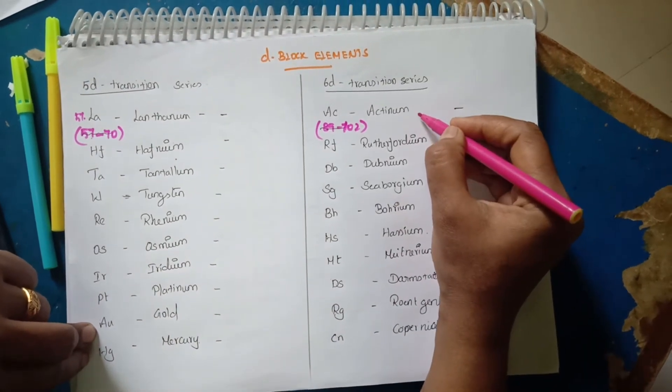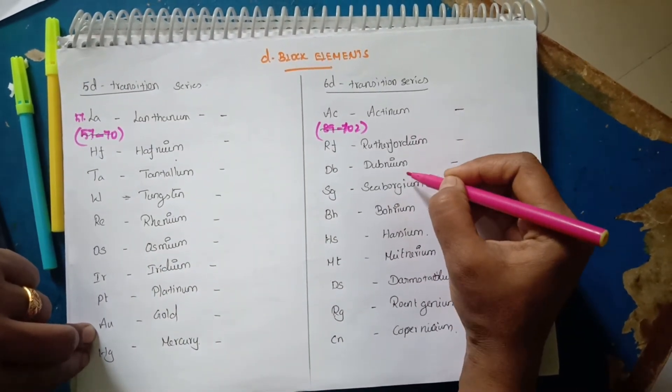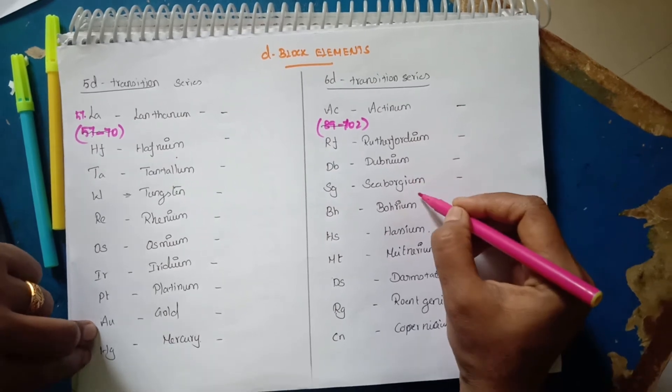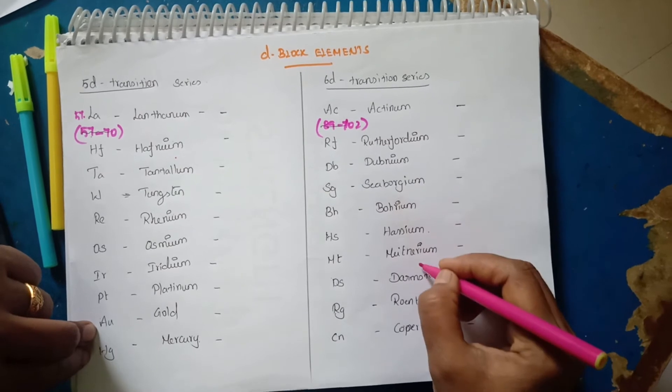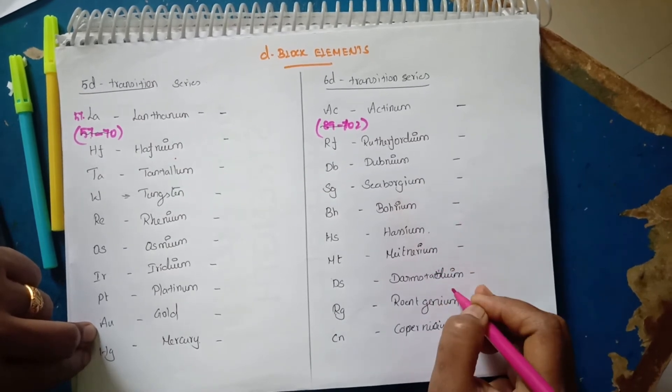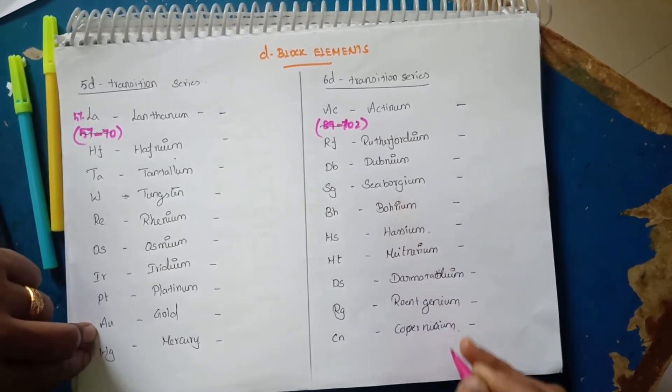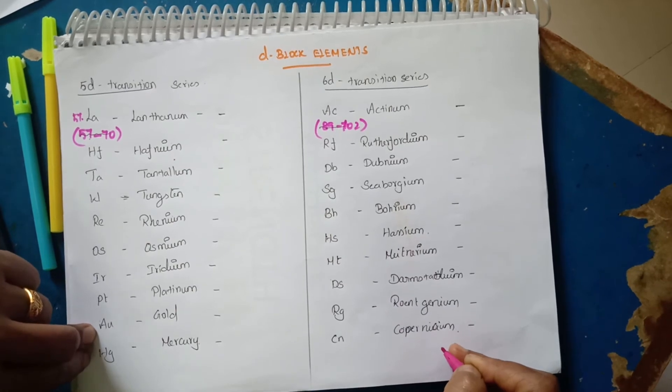In the 6D transition series: Actinium, Rutherfordium, Dubnium, Seaborgium, Bohrium, Hassium, Meitnerium, Darmstadtium, Roentgenium, Copernicium.